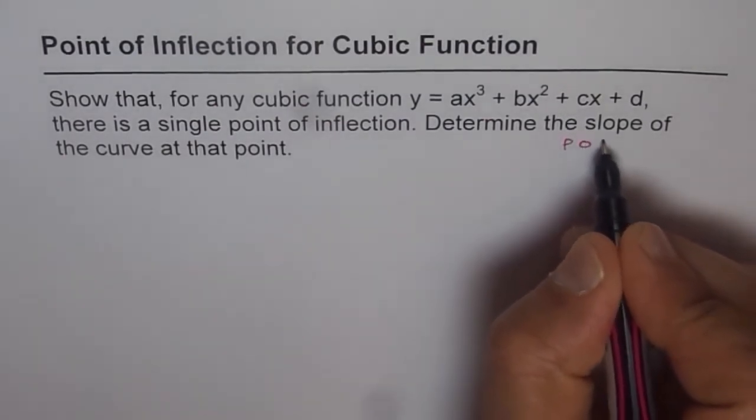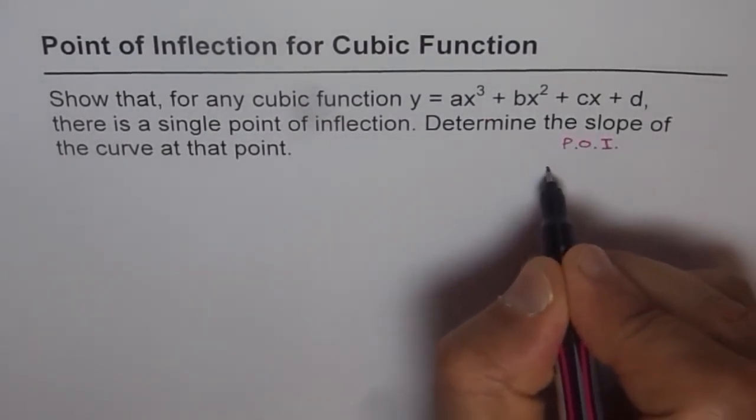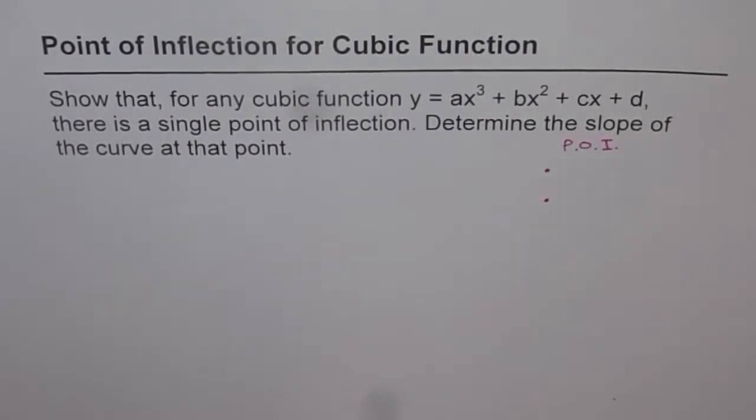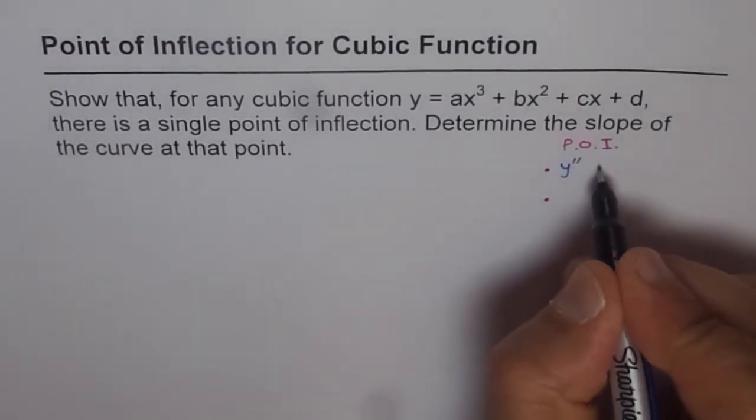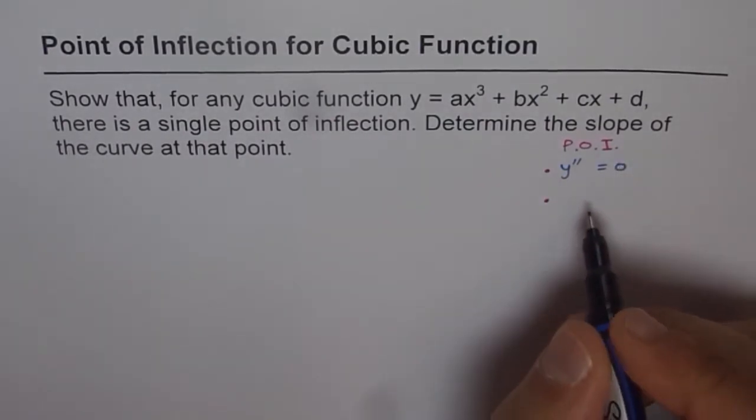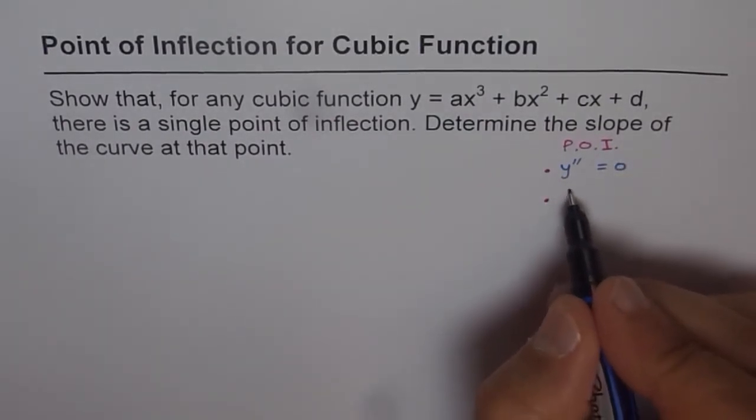I'll write in short. Point of inflection for us means two things. One is that the second derivative, y double dash, is equal to zero, and the second thing is concavity changes.